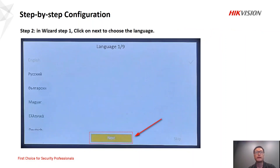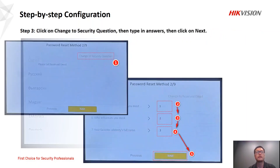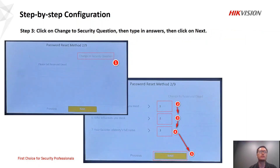In step one, type in a password and click OK to activate the device. In step two, click next — we choose English; by default it's English, so click English and click next. In step three, click on 'change to security question', and click next. Then choose an answer, type a quick answer, and click next. That's step three.